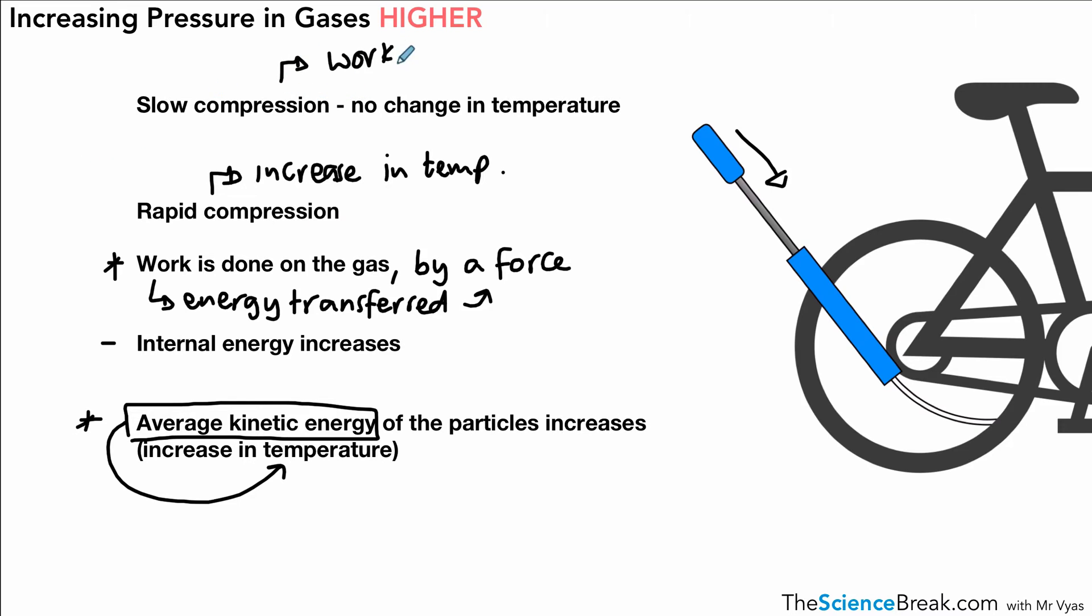With slow compression, we sometimes don't get a temperature change. Work is still done, but energy might not be transferred rapidly enough to increase temperature. Or if it does increase, energy is lost at the same rate it's gained, so temperature doesn't go up.